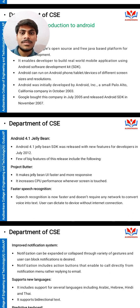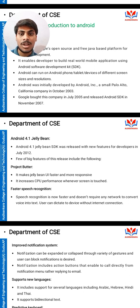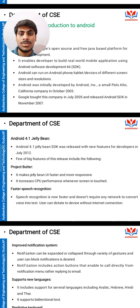Android can run on an Android phone, tablet, and devices of different screen sizes and resources. Android was initially developed by Android Inc., a small Palo Alto, California company in October 2003. Google bought this company in July 2005 and released the Android Software Development Kit in November 2007.